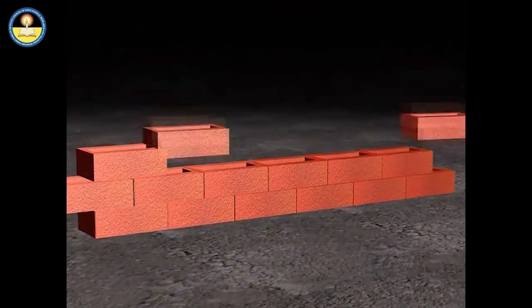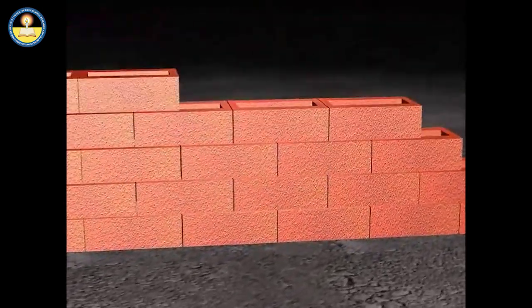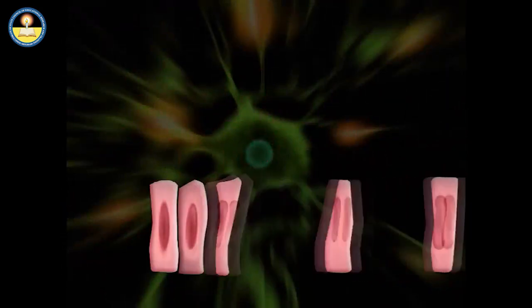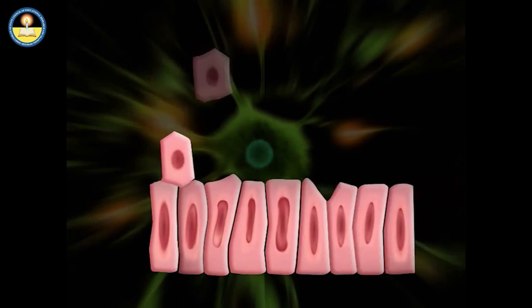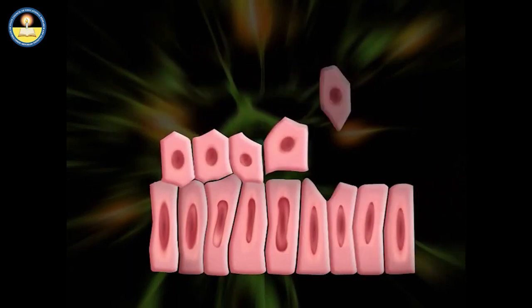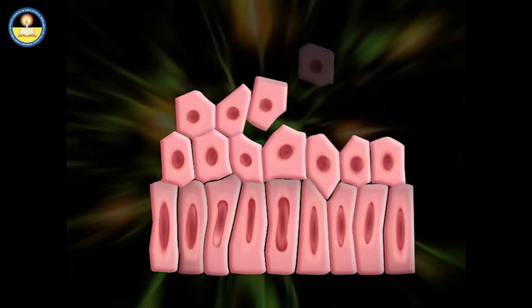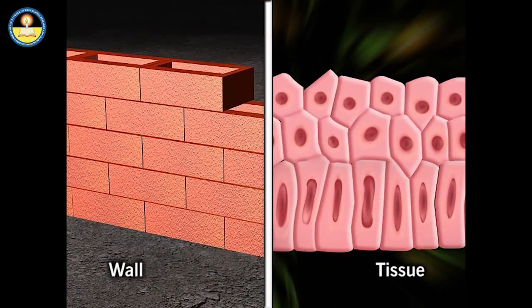We can compare cells with the bricks of a wall. Just as a brick is a part of a wall that forms buildings of different shapes, cells arranged in some defined pattern form tissues, which in turn form different organs of a body. Bricks arranged in a systematic manner form a wall; similarly, identical cells join and form a structure known as tissue.